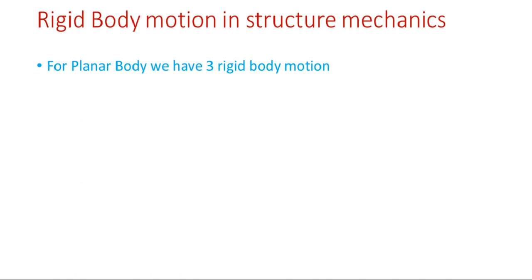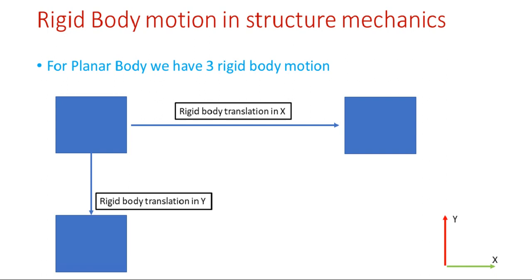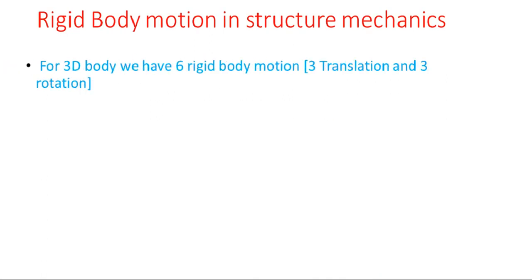For a planar body — meaning any body in a plane, like a 2D structure — we have three rigid body motions. For a body in the x-y plane, the possible motions are: translation in the x direction, translation in the y direction, and rotation in the x-y plane (that is, rotation about the z axis). So for a planar body we have three rigid body motions, two translations and one rotation.